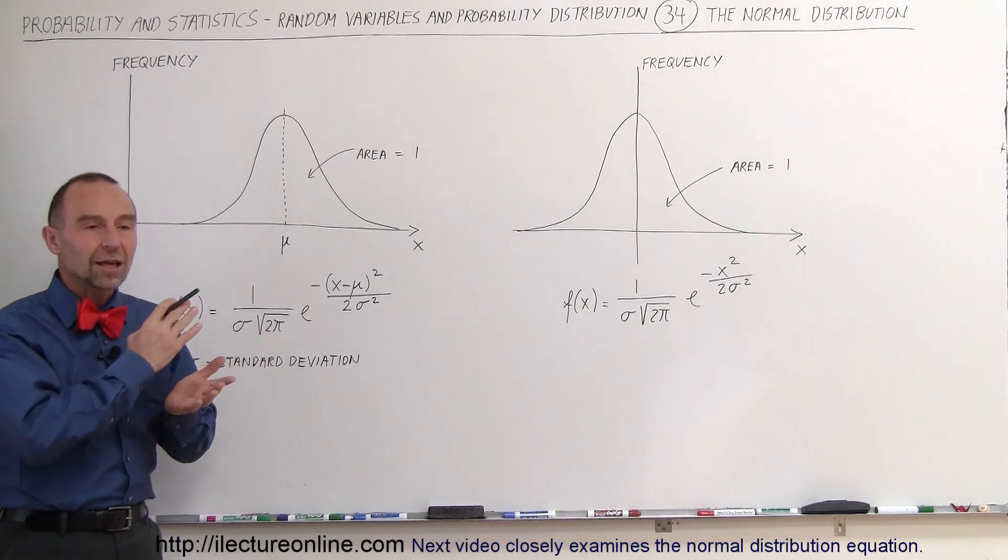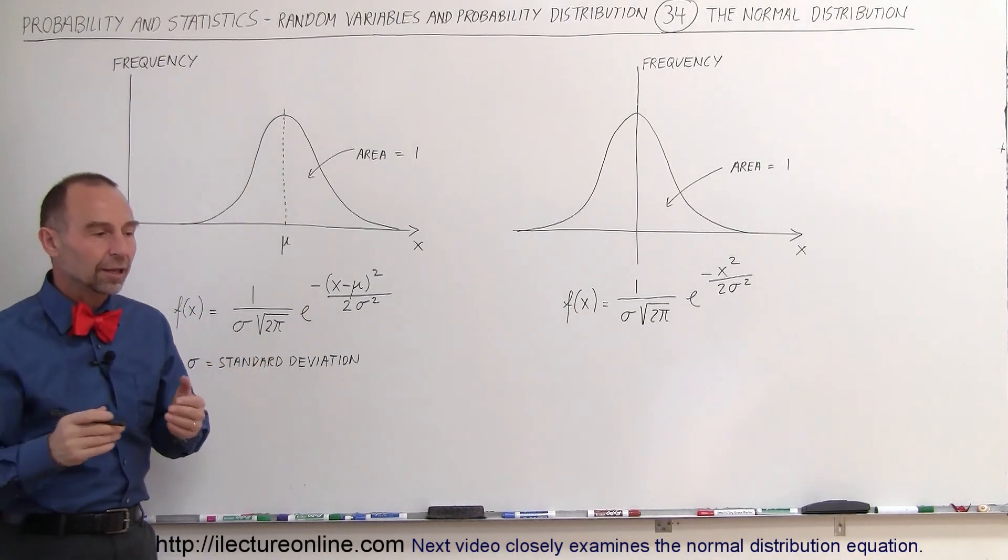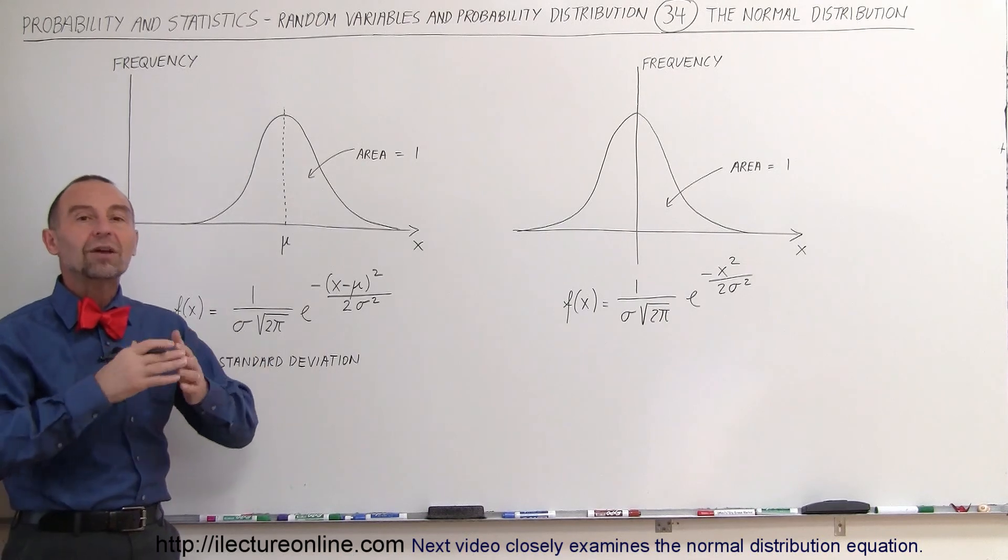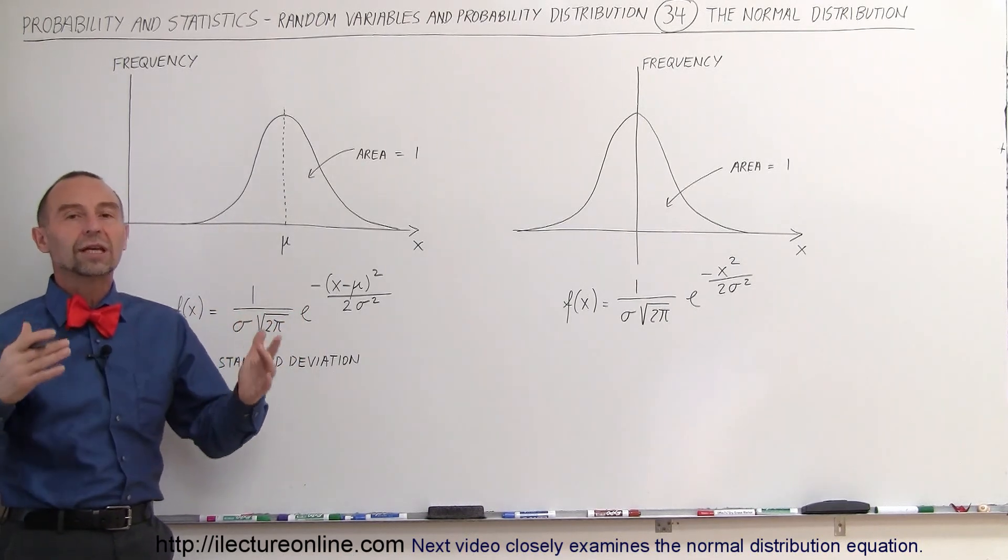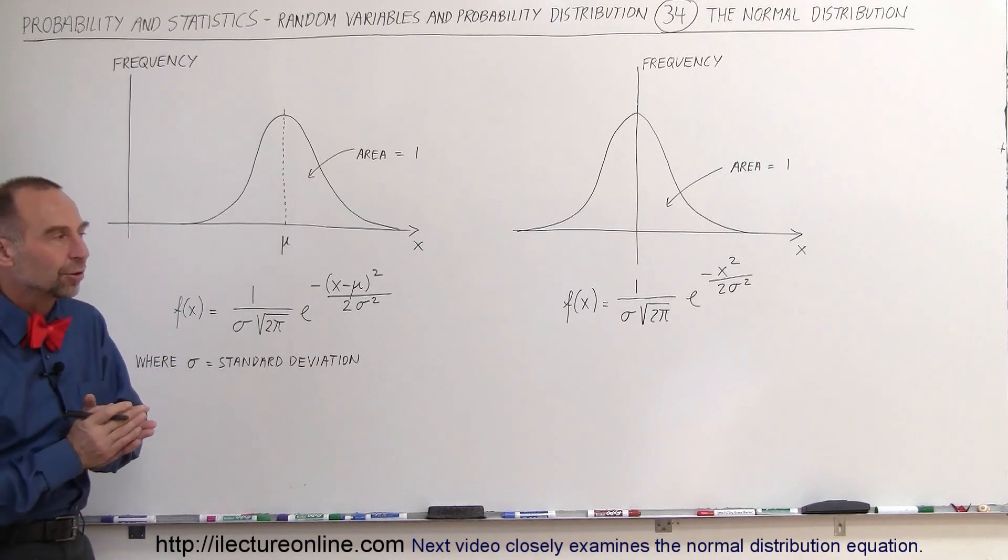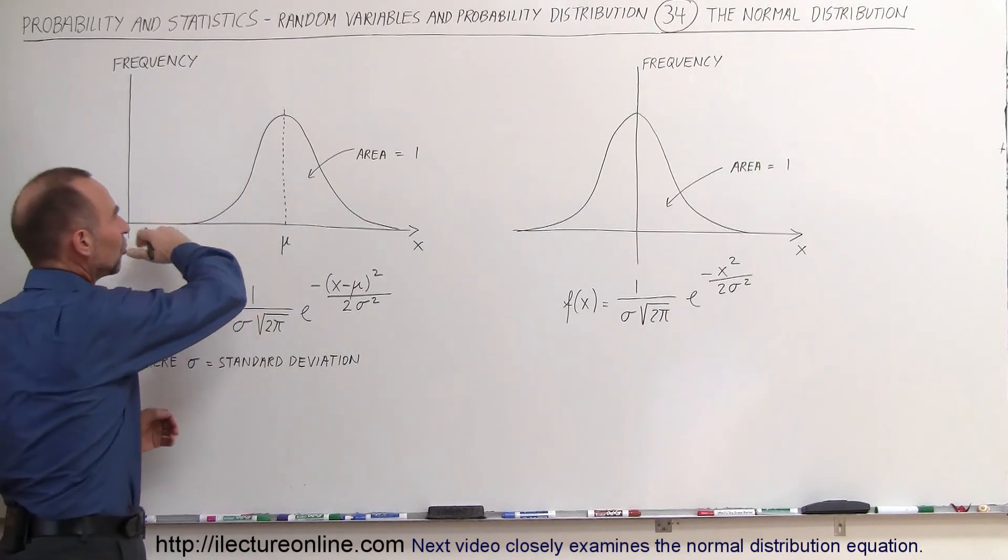What we've seen before is we've seen frequency distributions on, for example, the price distribution of a commodity or the number of quantities sold in a given day or in a month or a year for a company or something like that. And usually the distribution looks like this.